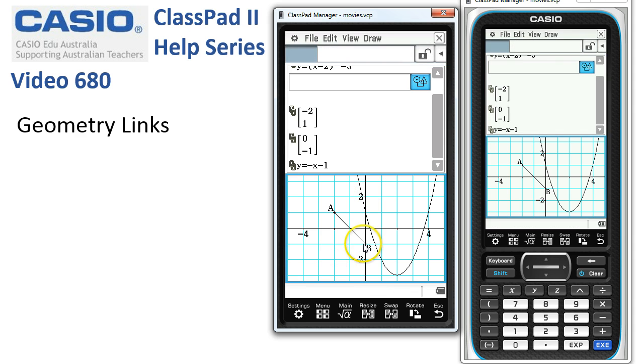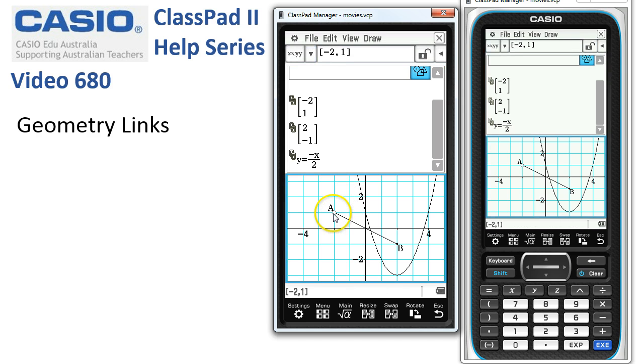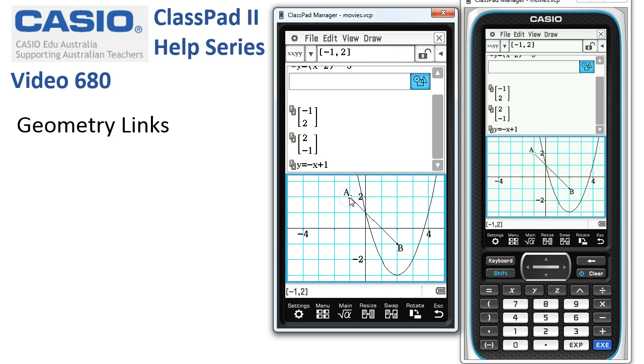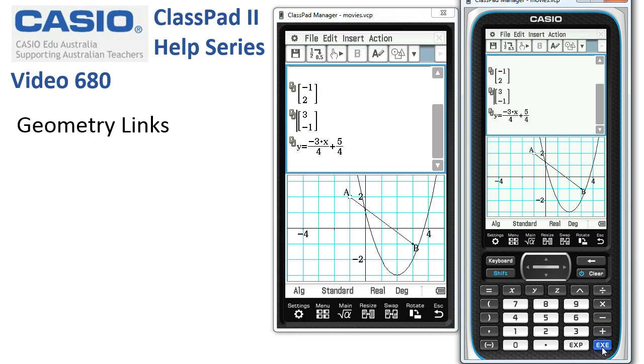And now we can watch what happens if I move B. Maybe I'll move B over to here. Then you can see the equation of the line has been updated. Maybe I'll tap off, tap onto A, move A up to here. And the equation moves. Or we can simply modify a point by tapping on it in the upstairs window and pressing execute. And everything kind of updates.